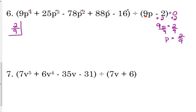Then let's list our coefficients: 9, 25, negative 78, 88, and negative 16. Leave your space, draw your line, bring down the first coefficient of 9.